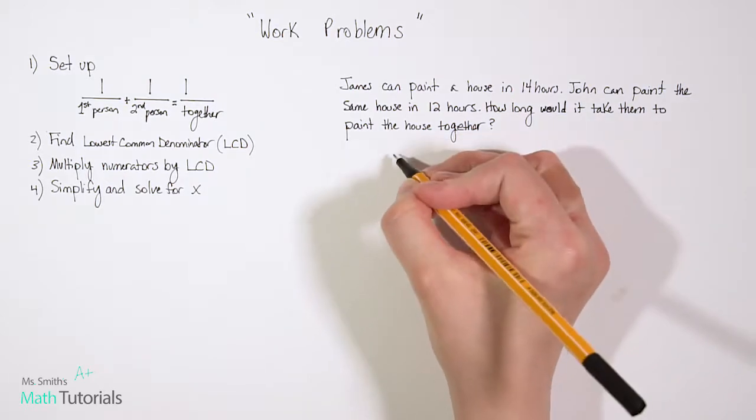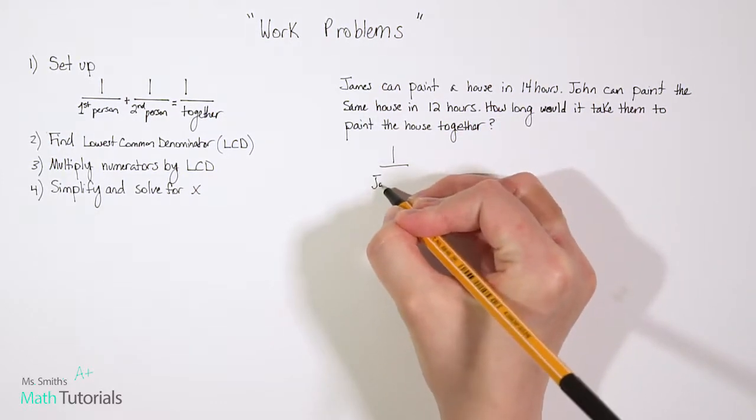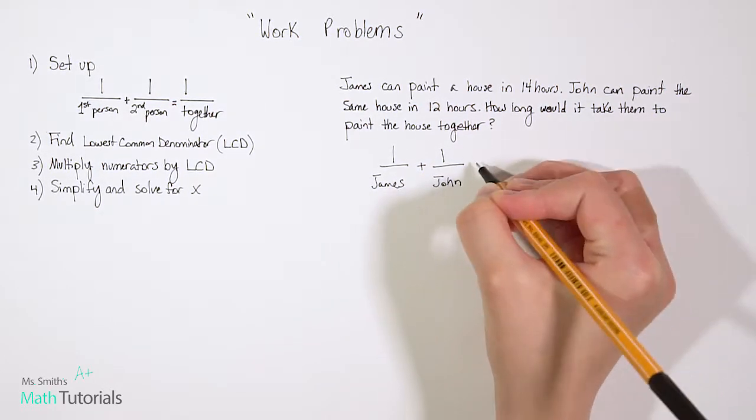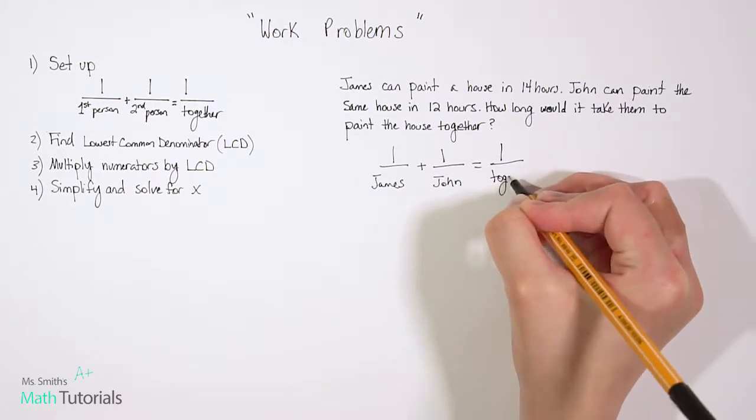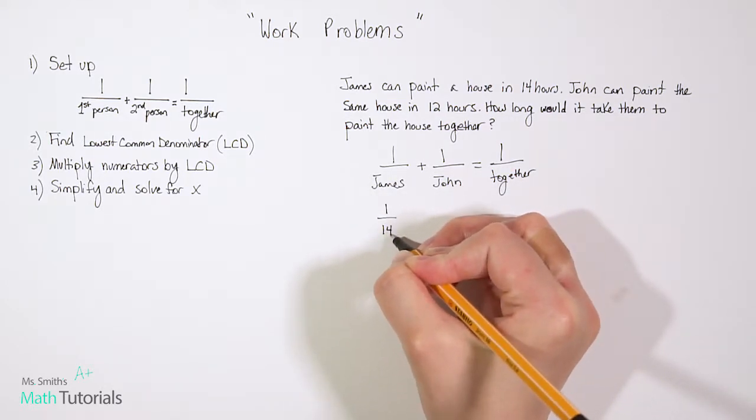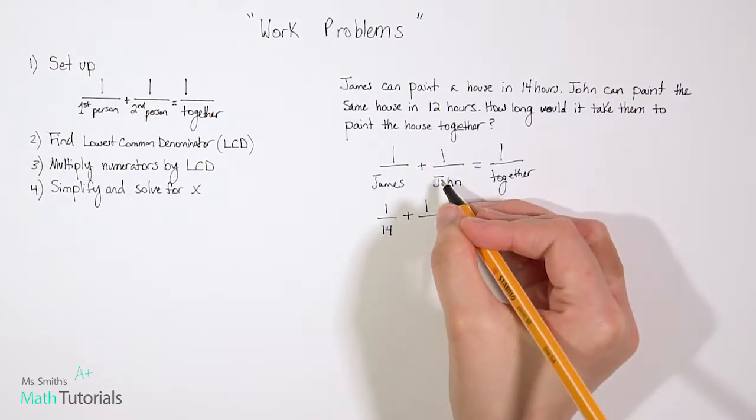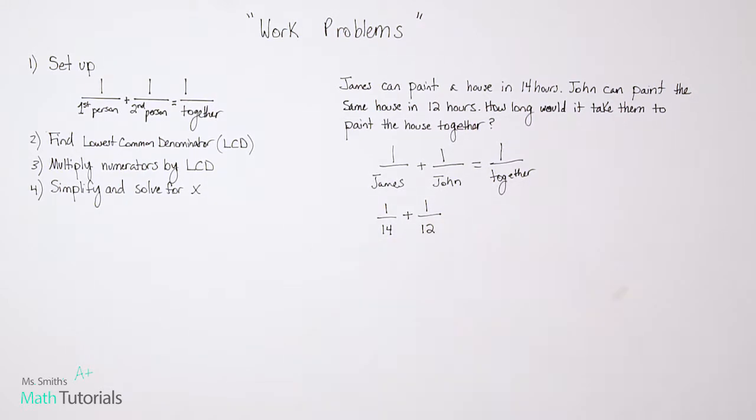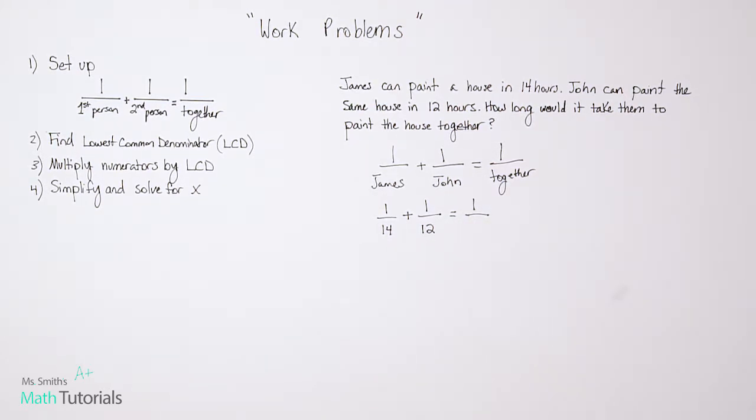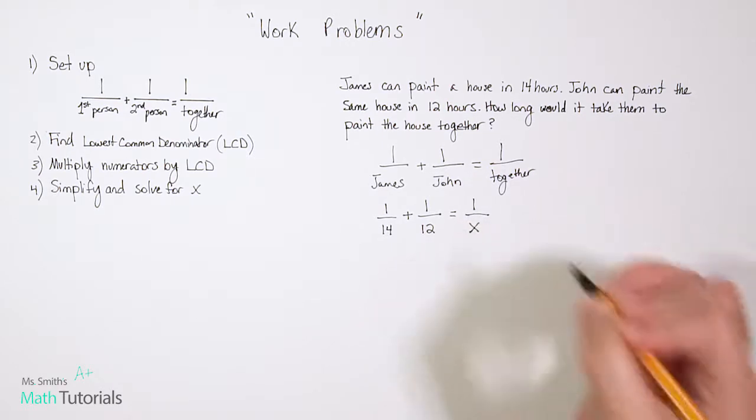We're going to write one over our first person, who would be James, plus one over our second person, who would be John, equals one over them together. So how long would they take if they worked together? Now, instead of having the name, we're going to rewrite the setup. But instead of James, we're going to replace it with how many hours James can work. So we said James can work 14. So we're going to rewrite this as one over 14 for James, plus one over 12 for John equals one over together. Now we don't know how long it would take them to paint the house together, so that's our x. That's what we're looking for.